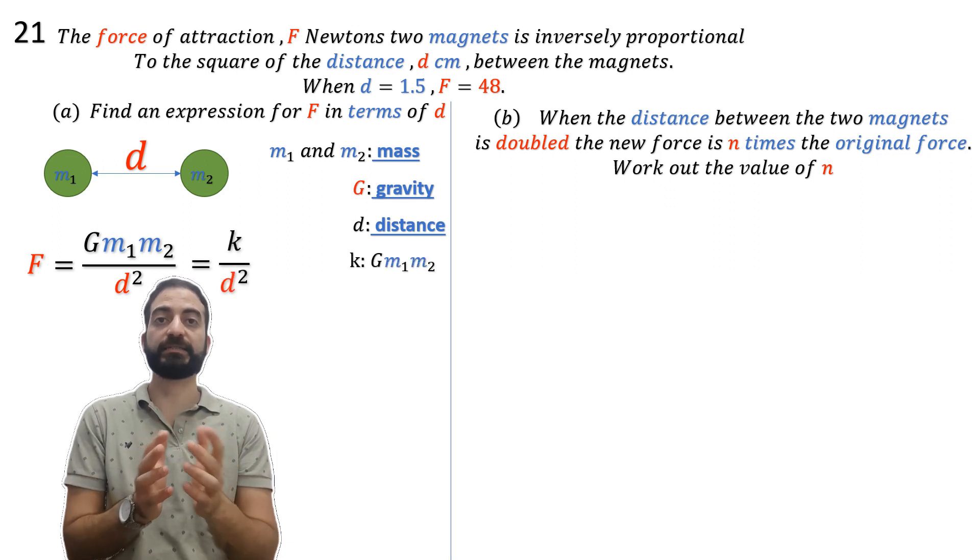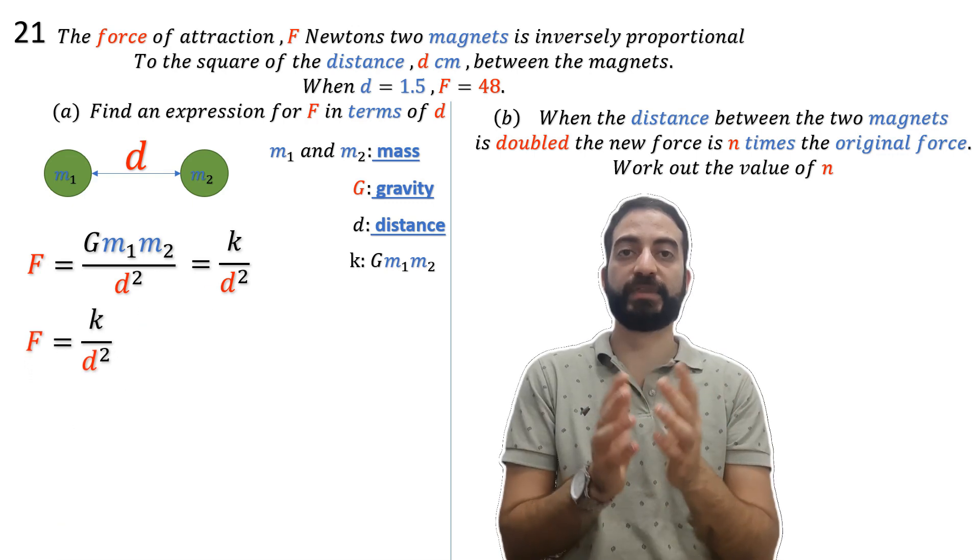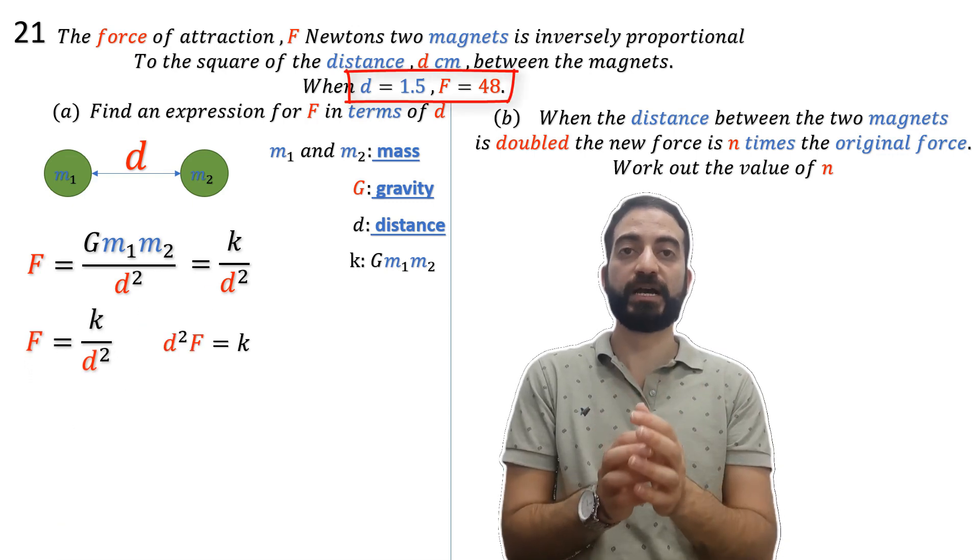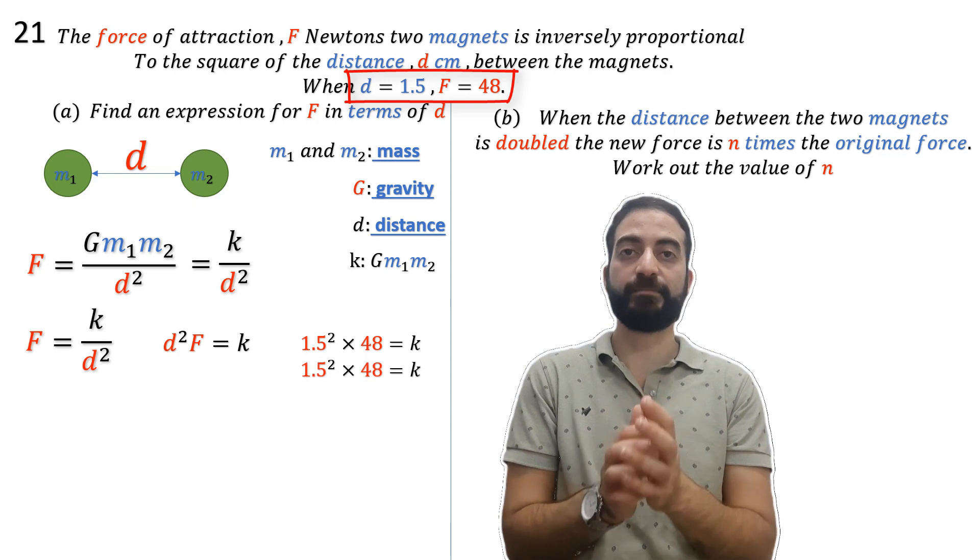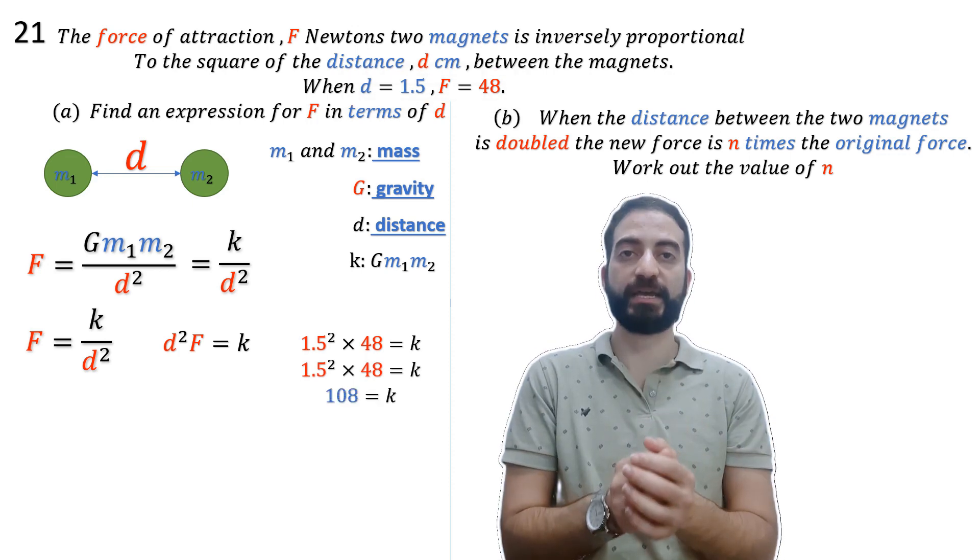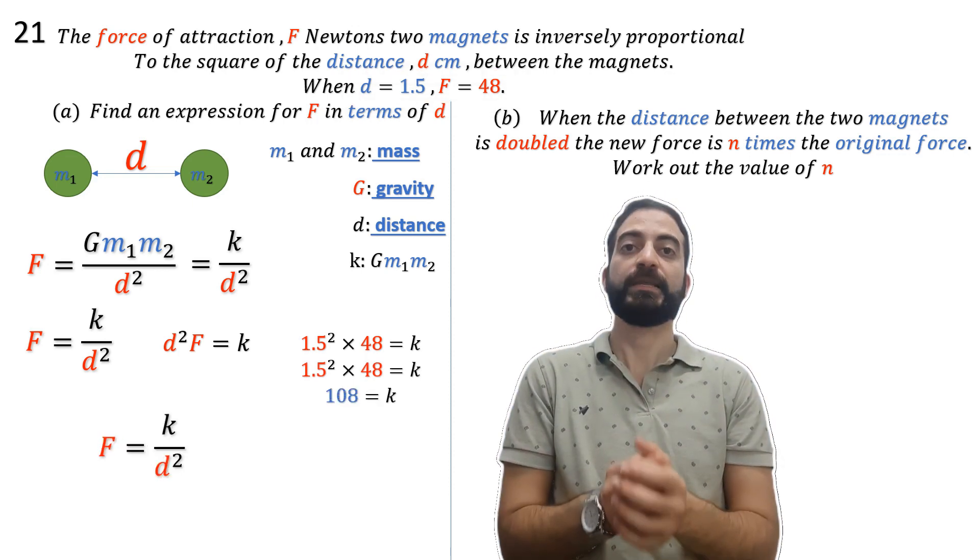We can find k using the given information. We have the force and the distance values. By substituting these into the equation, we calculate the value of k.